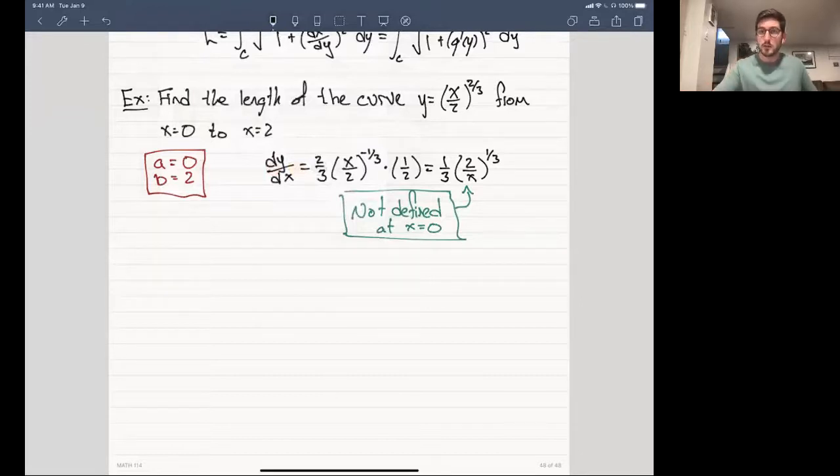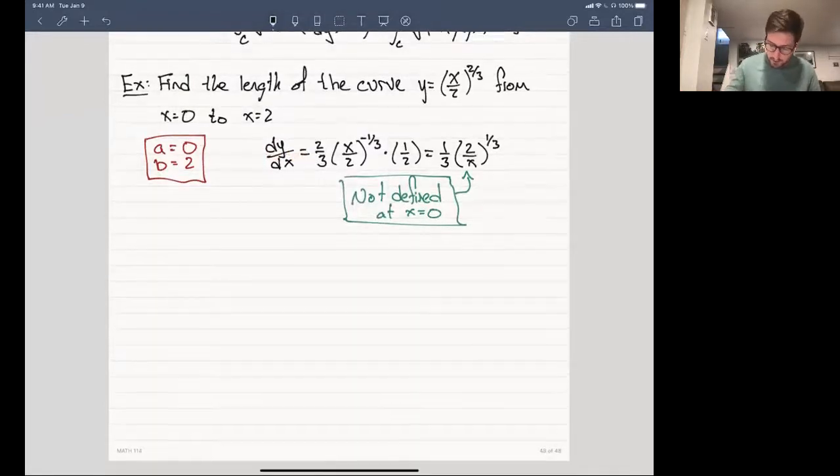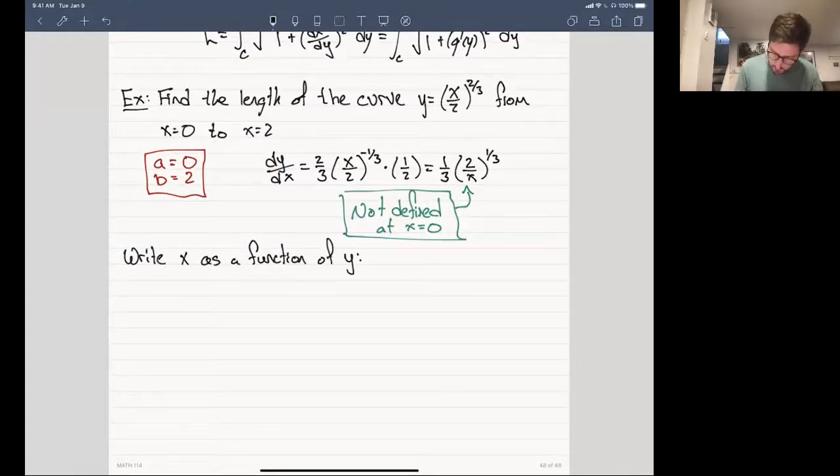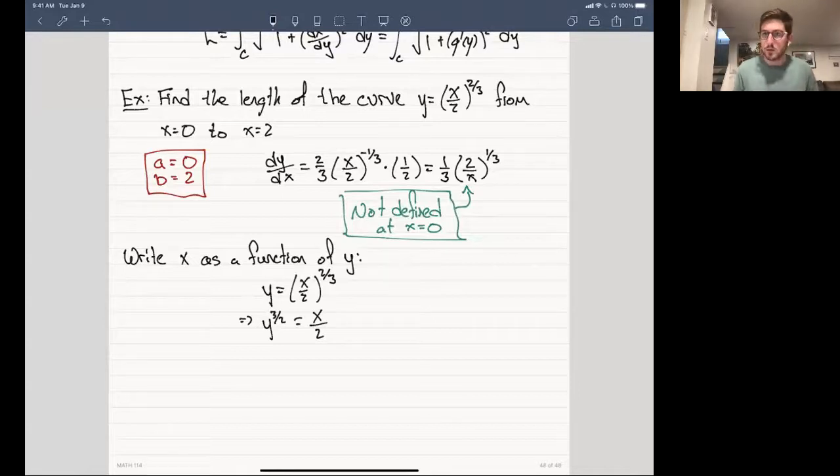Well, the way that we're going to handle this is we're going to find the inverse of this and we're going to write x as a function of y instead. So write x as a function of y. So the original curve y = (x/2)^(2/3). Let's raise everything to the three-halves power. So I get y^(3/2) = x/2. And then I can multiply both sides by 2. This gives me x as a function of y, which is 2y^(3/2).